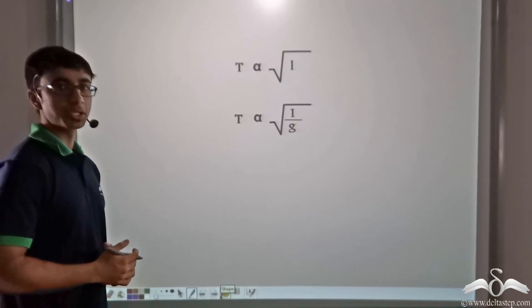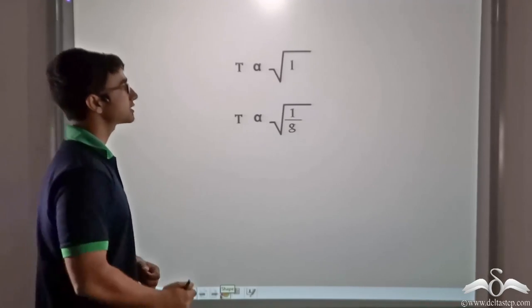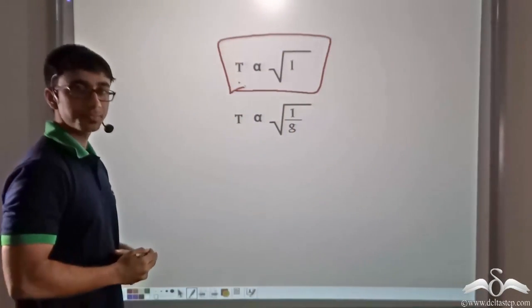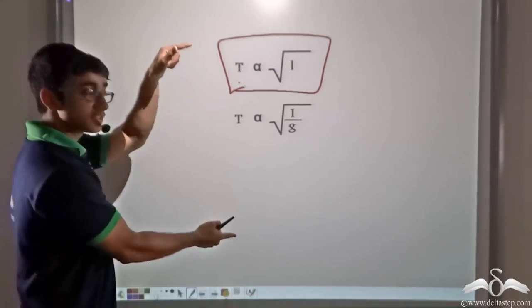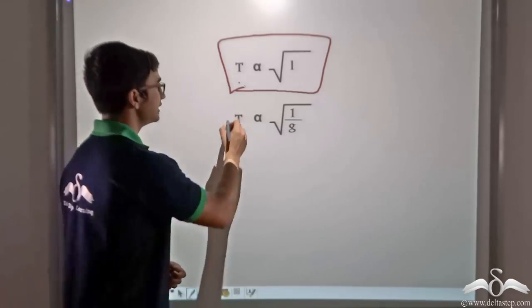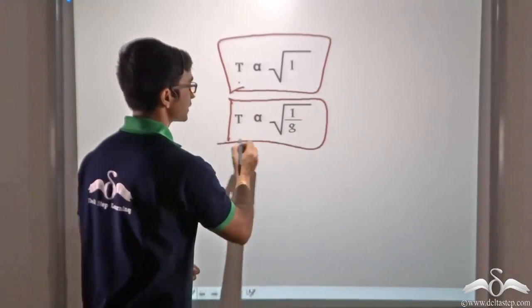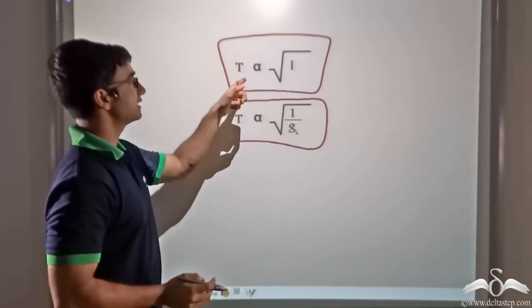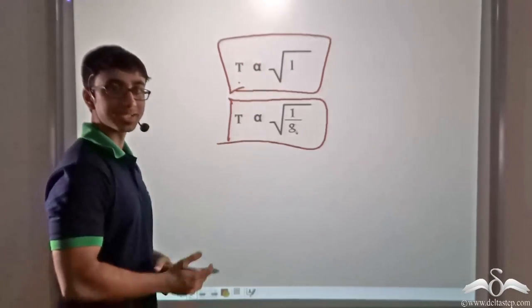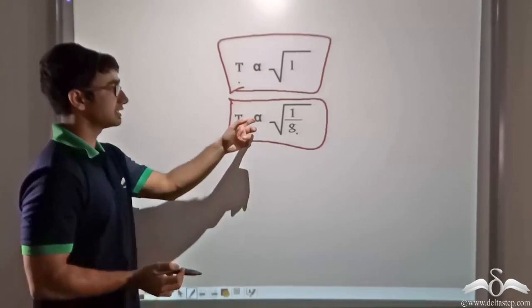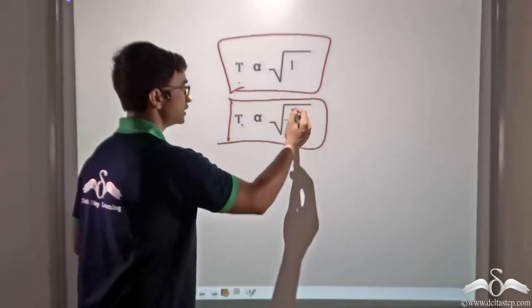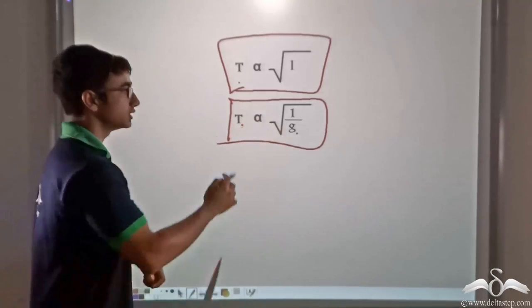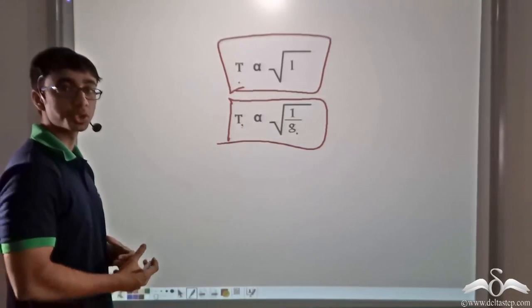The time period of a pendulum depends on two things. Firstly, it is directly proportional to the length of the pendulum, or in other words the length of the string that we have considered. Secondly, it is dependent on the acceleration due to gravity. Time period T is directly proportional to root over L, that is the length, and time period T is directly proportional to root over 1 by g, or in other words it is inversely proportional to the square root of g, that is the acceleration due to gravity.